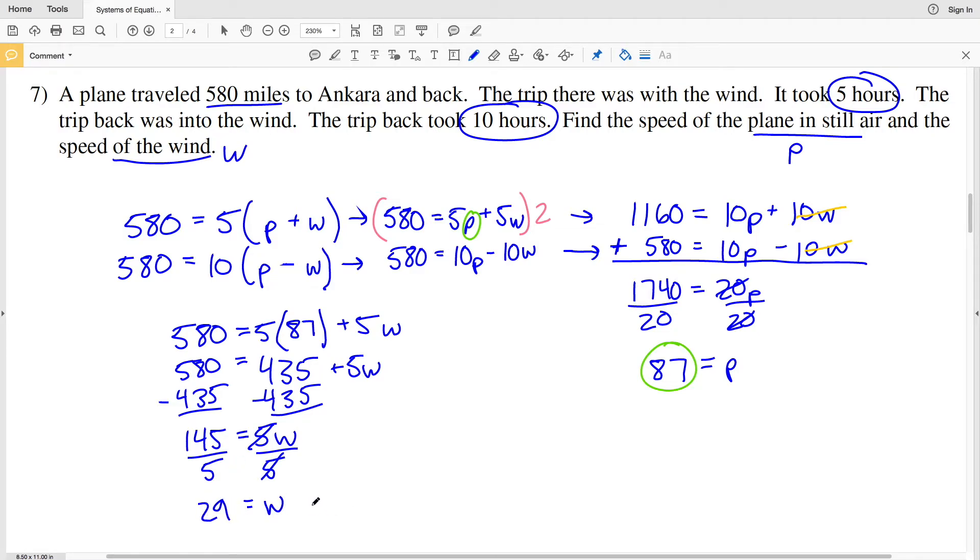And that's going to be miles per hour. So the plane has a speed of 87 miles per hour, and the wind has a speed of 29 miles per hour. And again, we can figure out our label because speed is distance over time. And if our time is in hours and our distance is miles, then we're going to be in miles per hour. So that is our solution in number 7. Let's continue on to number 8.